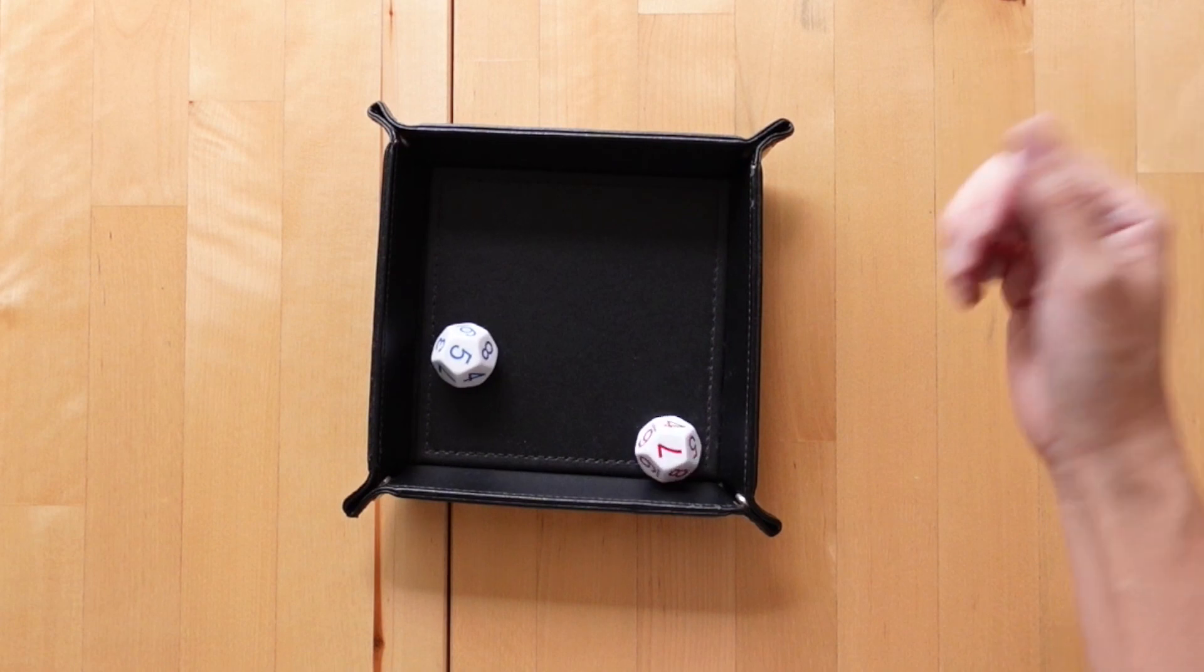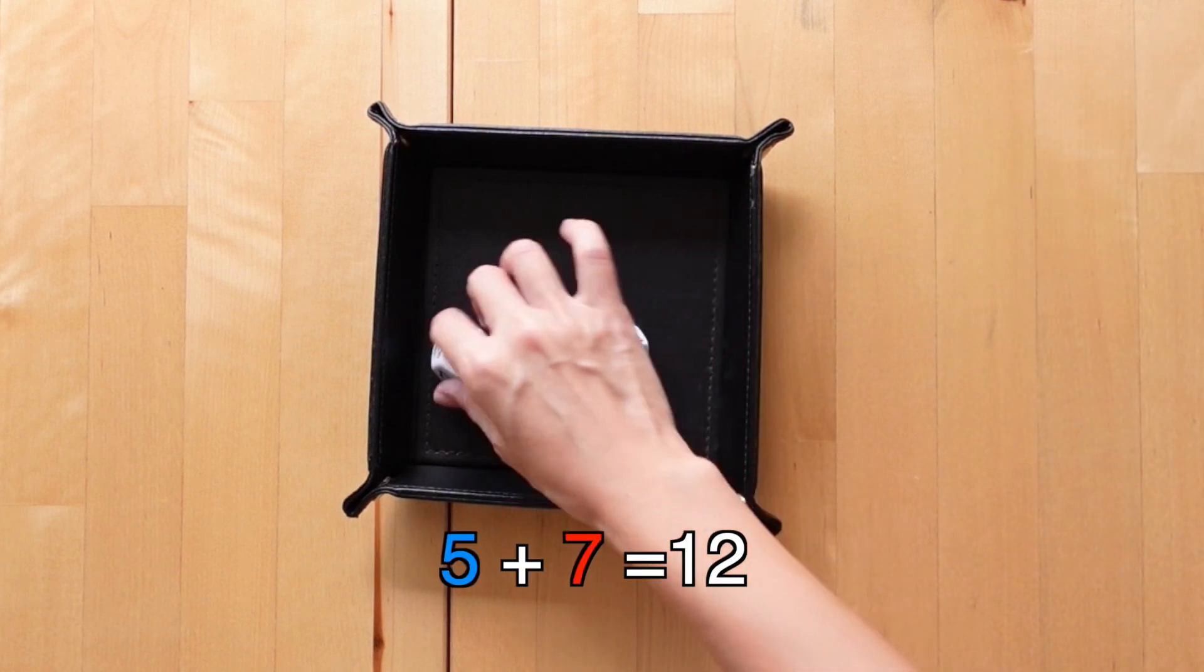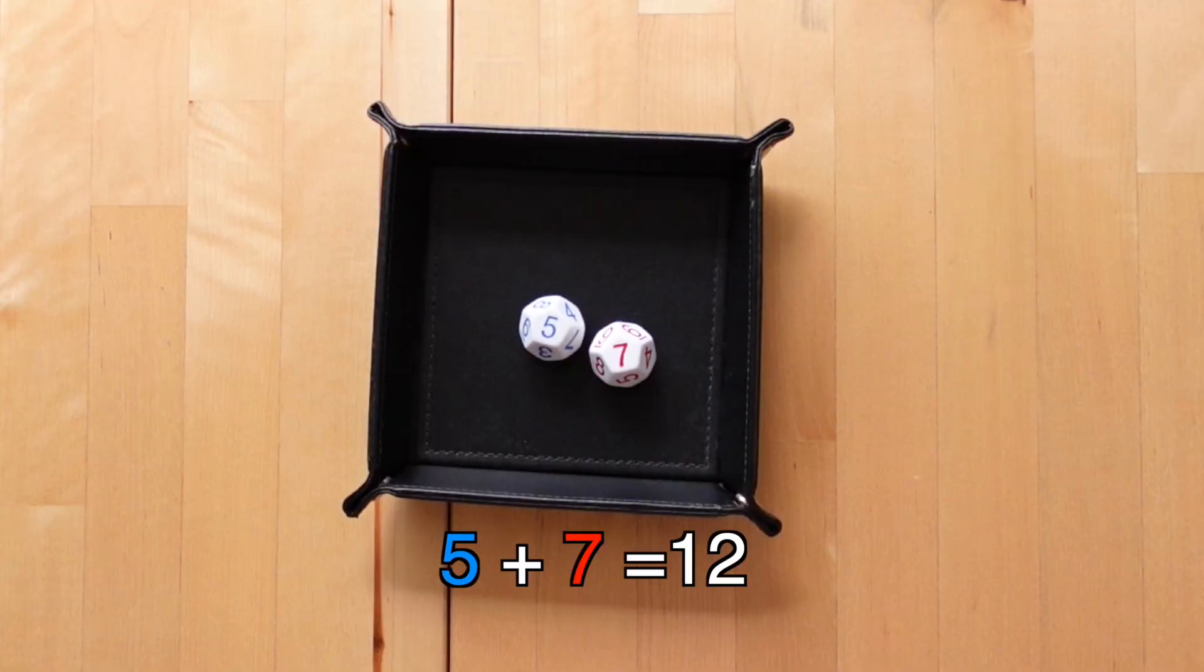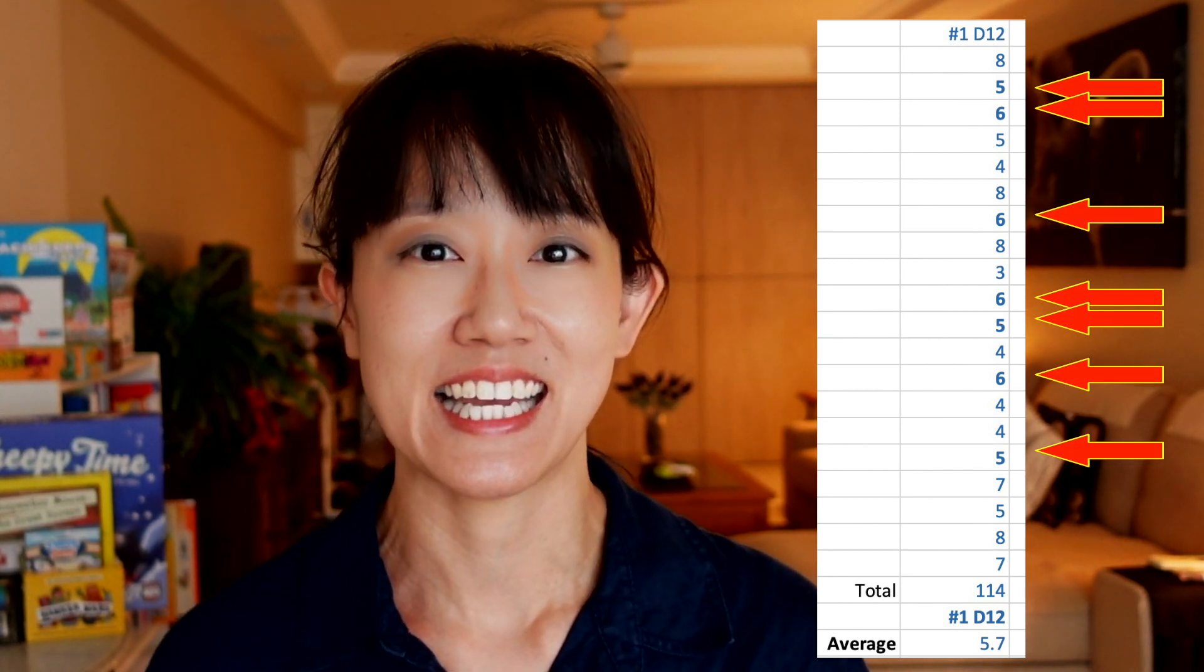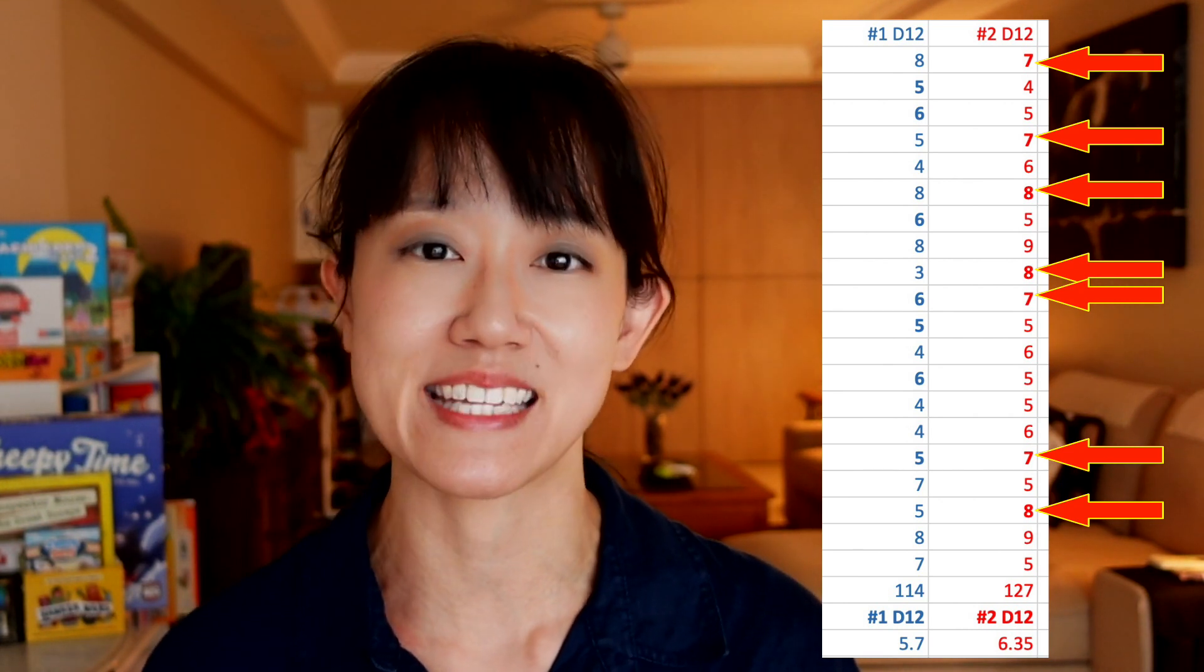And if you were using one red and one blue, then the mean would be 12. In our tests, rolling a single blue dice would most likely land between 5 and 6, and a single red dice would most likely land between 7 or 8.